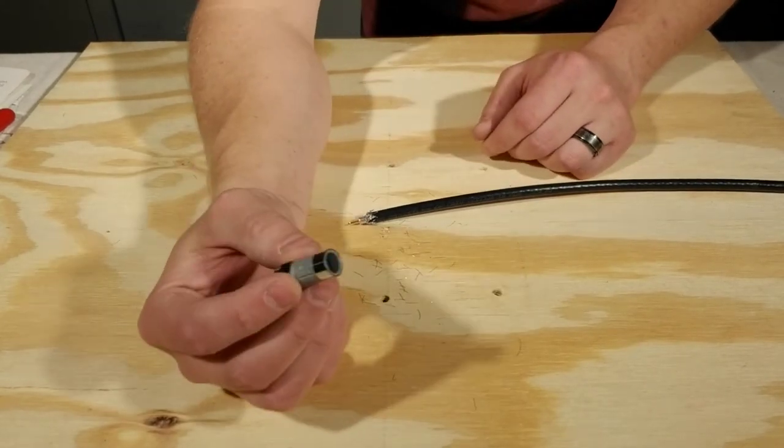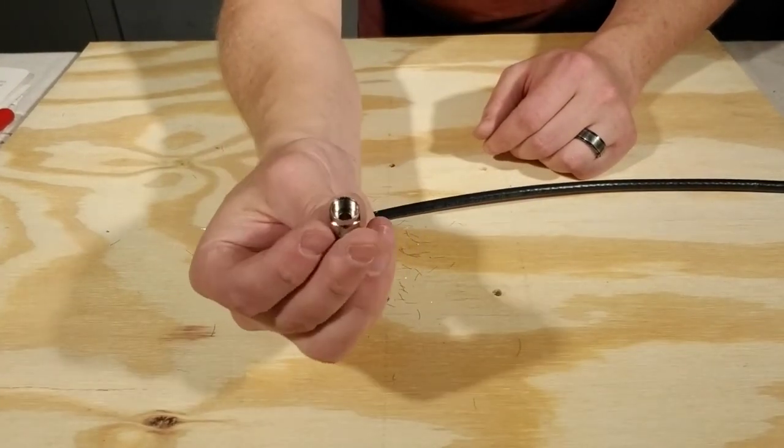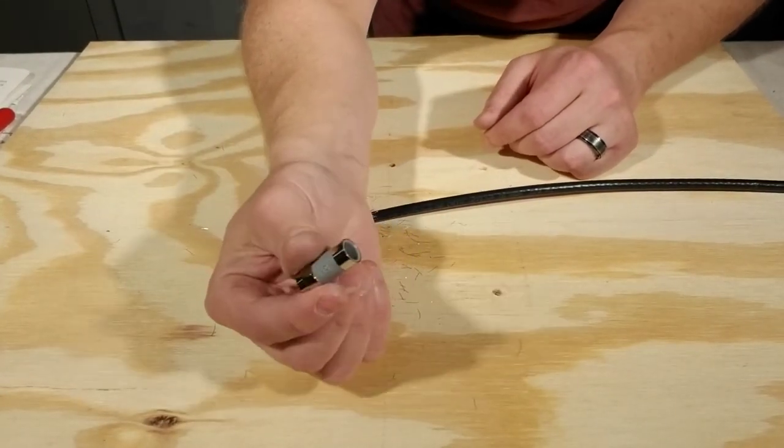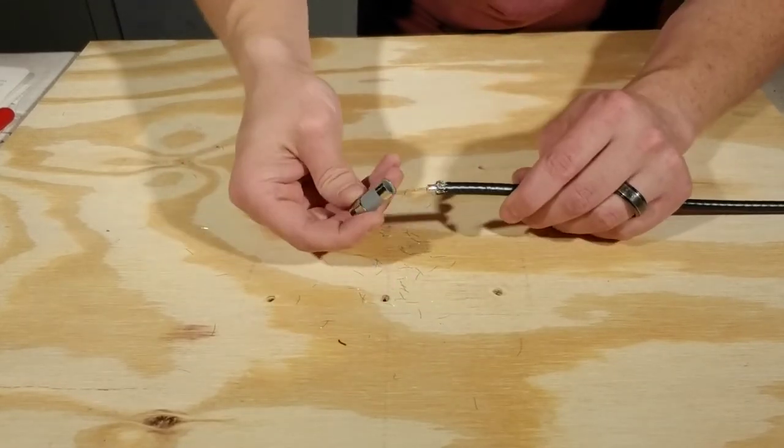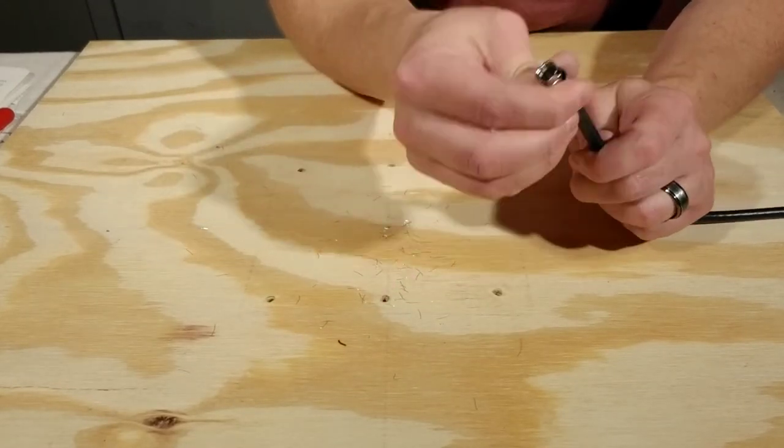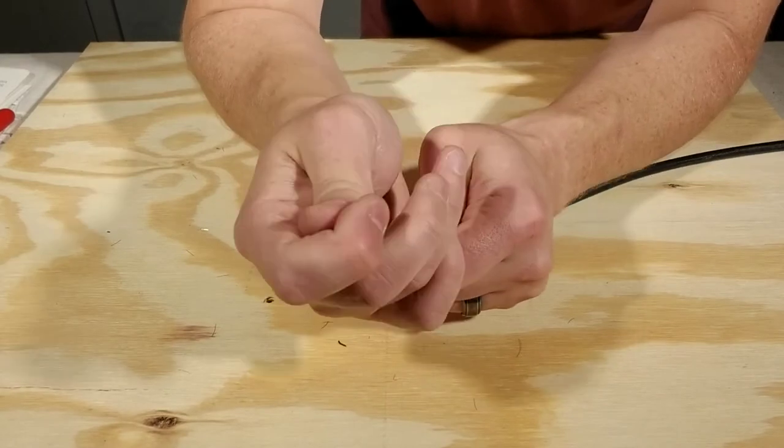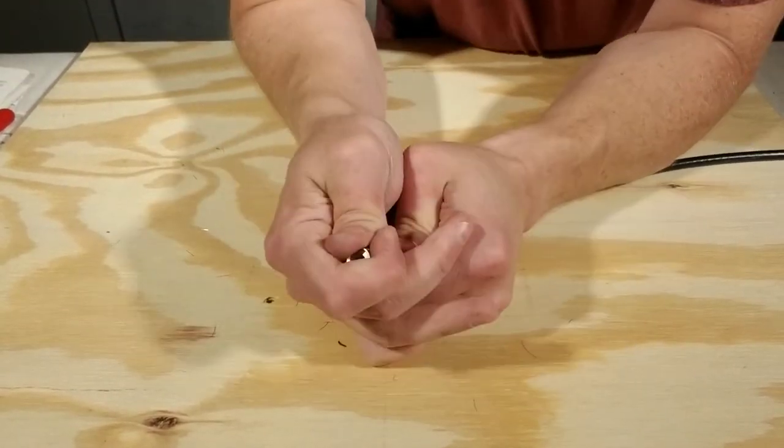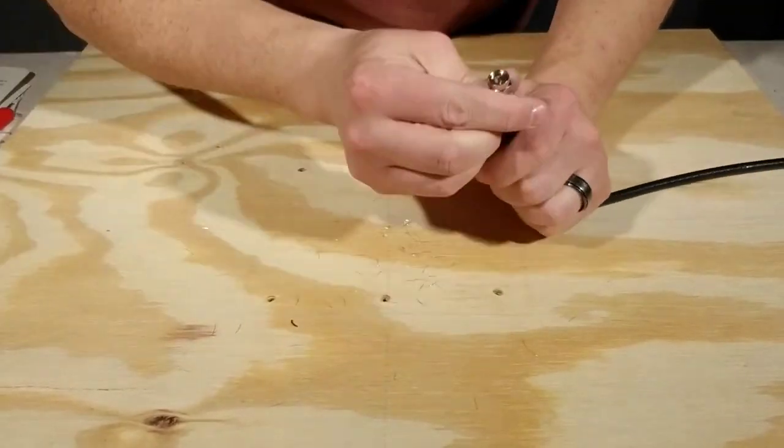So this is the push to fit connector I'm going to use. All you do is just push it onto the end of the coaxial cable. You just keep pushing it until the white foam is as far in as it can go. Of course this one didn't go on easy. It was a struggle, but I did eventually get it to seat correctly.